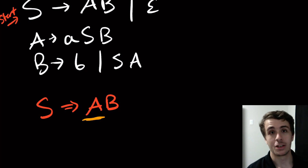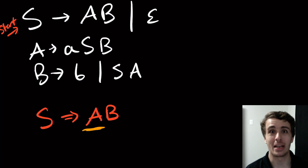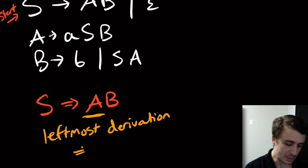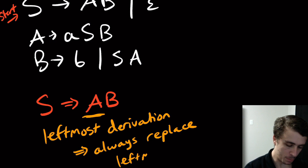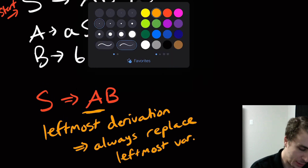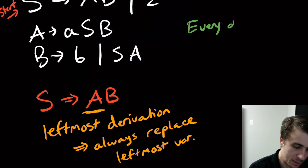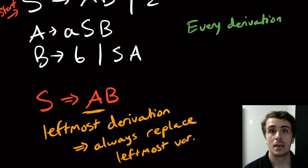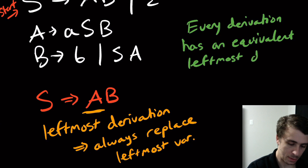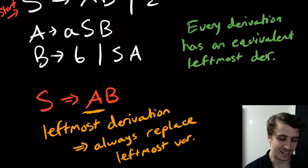What we're going to focus on is always replacing the leftmost variable, and you wouldn't be surprised that this is called a leftmost derivation. A leftmost derivation always replaces the leftmost variable. It's not hard to see that every derivation has a leftmost one — so every derivation, even if it isn't leftmost, has an equivalent leftmost derivation.